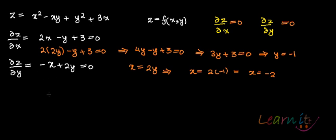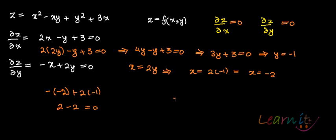You can verify these values in both equations. Checking the second equation: −(−2) + 2(−1) = 2 − 2 = 0. So the two critical points satisfying both equations are x = −2 and y = −1.